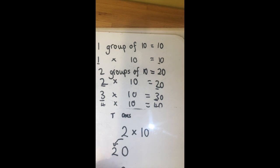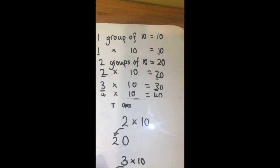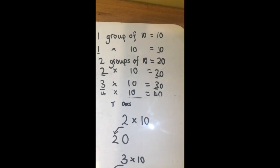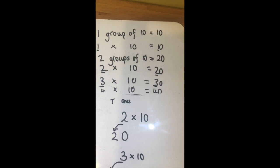Let's try three times ten. I move my digit one place to the left and I add zero as a place marker. Four times ten. I move my digit one place to the left and add zero as a place marker.